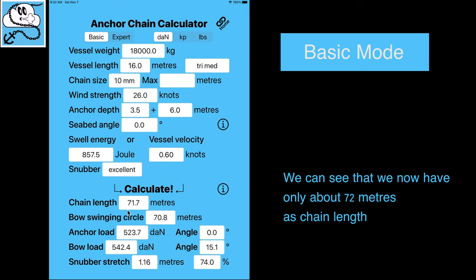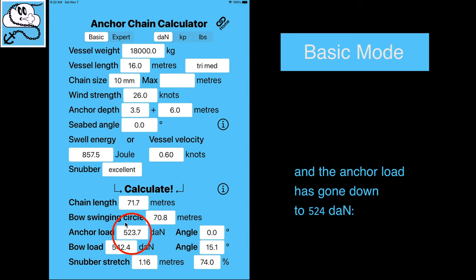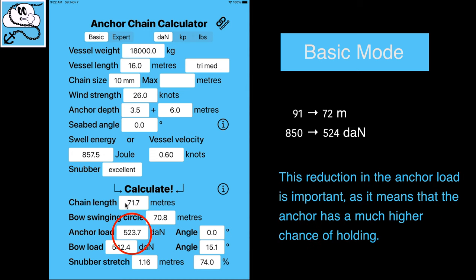We can see that we now have only about 72 meters as chain length, and the anchor load has gone down to 524 dN. This reduction in the anchor load is important as it means that the anchor has a much higher chance of holding.